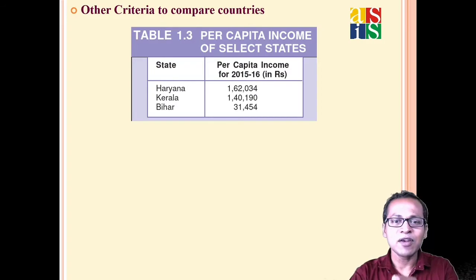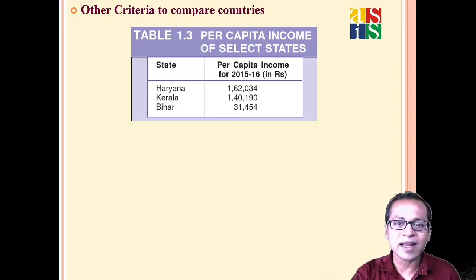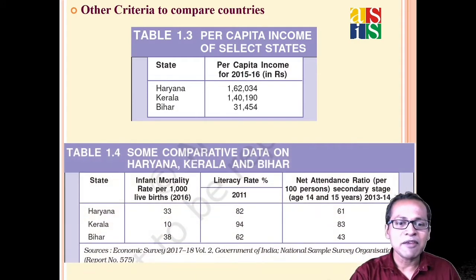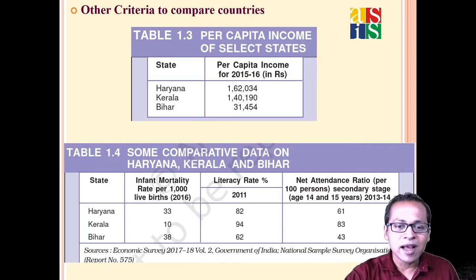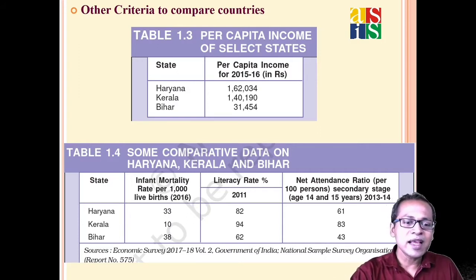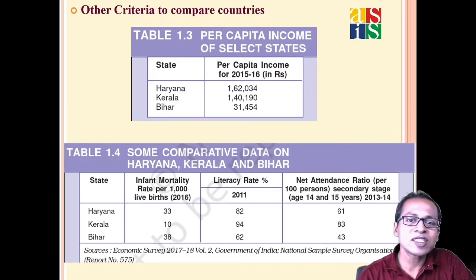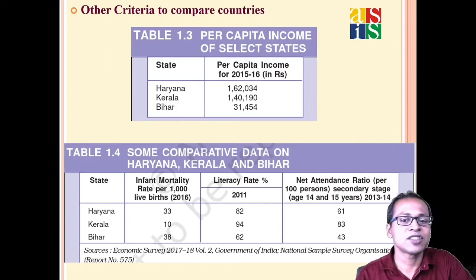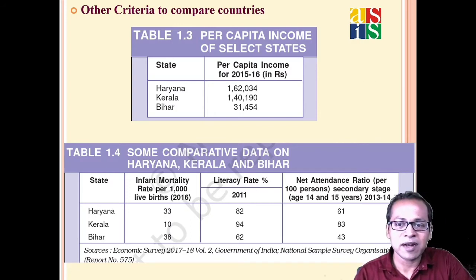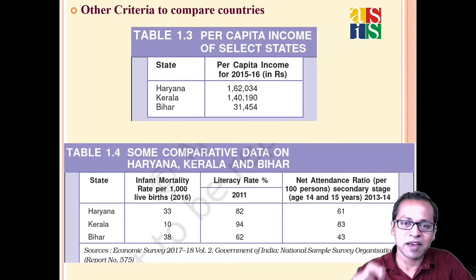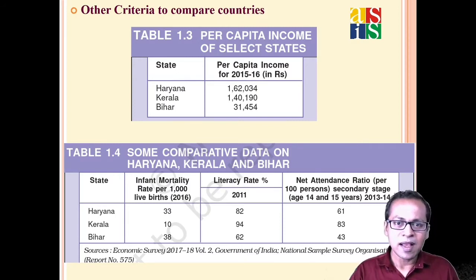If we look only at per capita income, Haryana is at number one, Kerala at number two, and Bihar is very far behind. But if we also consider literacy rate, infant mortality rate, and net attendance ratio, we find that Kerala's IMR is just 10, compared to 33 in Haryana. Kerala is having much lower infant mortality rate, indicating better health infrastructure. In literacy and net attendance ratio also, Kerala is faring better.